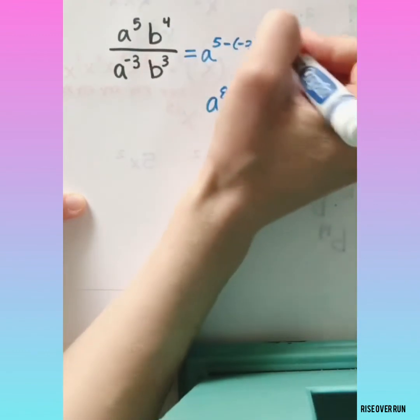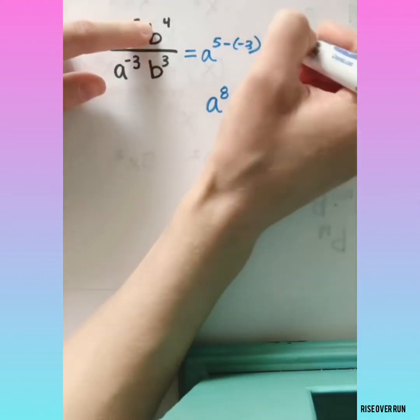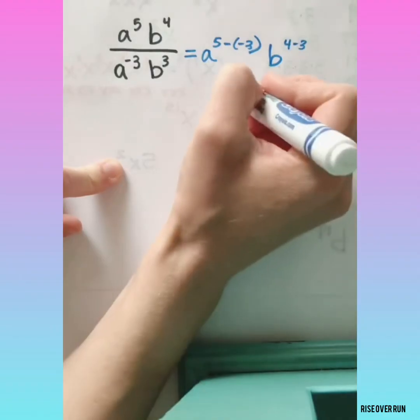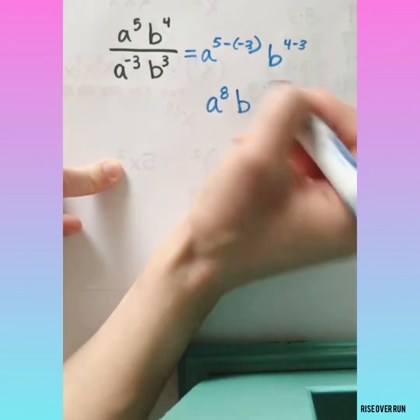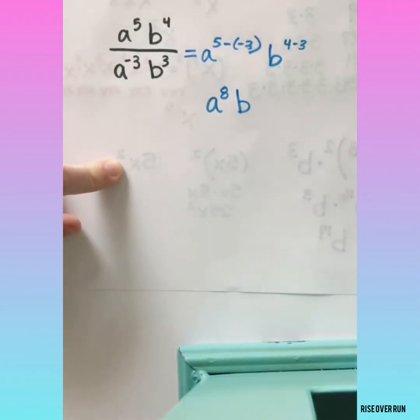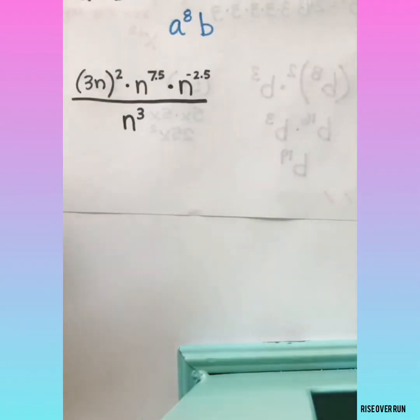Then let's look at what's going on with b. We have a 4 and we need to subtract 3. That's b to the 1st. You don't have to write a 1, we just know that that's b to the 1st. Let's look at this one.